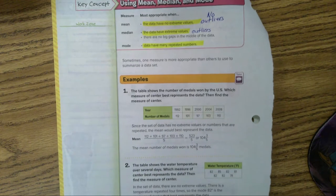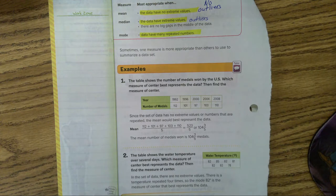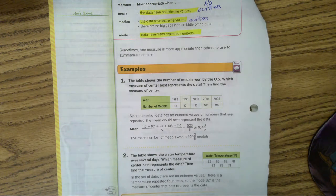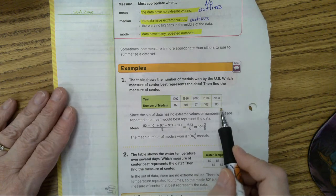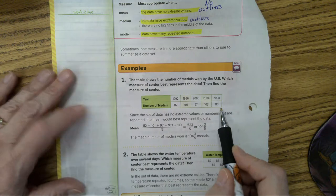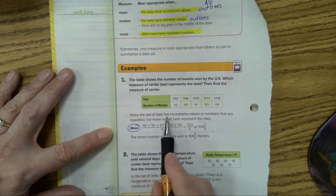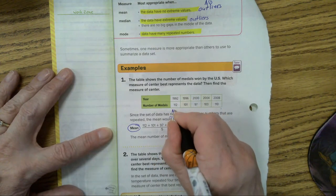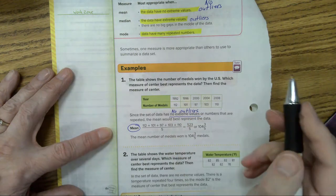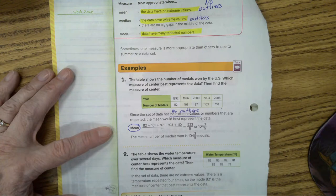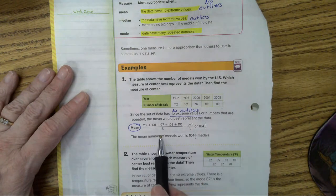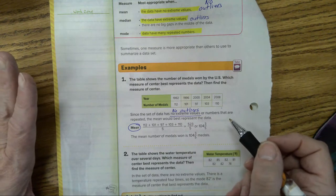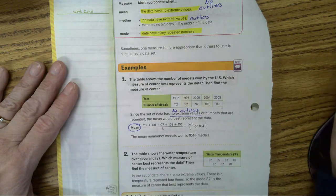Now let's go look at number one. The table shows the number of medals won by the U.S. Which measure of center best represents the data? Then find the measure of center. So, I'm looking at my data numbers here. Are there any outliers? Are there any numbers that look much bigger or much smaller? No. So, we're going to use mean. Since the data set has no extreme values, no outliers, on the test, they don't use the words extreme values. They use the word outliers. The mean would best represent the data. So, they added them together, divide by five, and the average amount of medals would be 104 and three-fifths medals. Any questions on that?